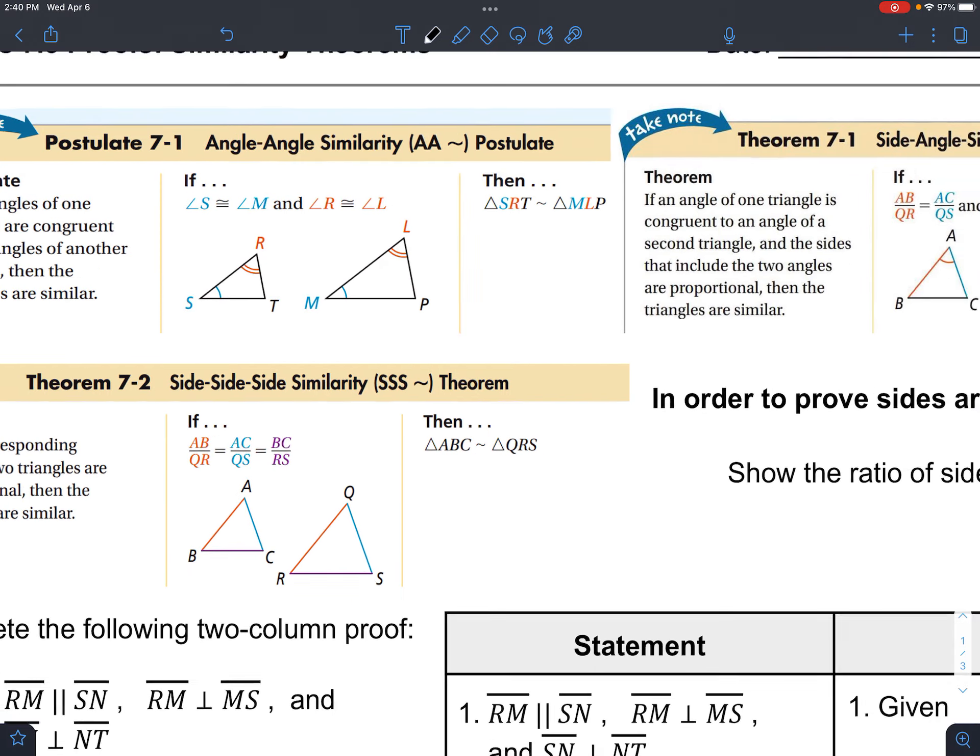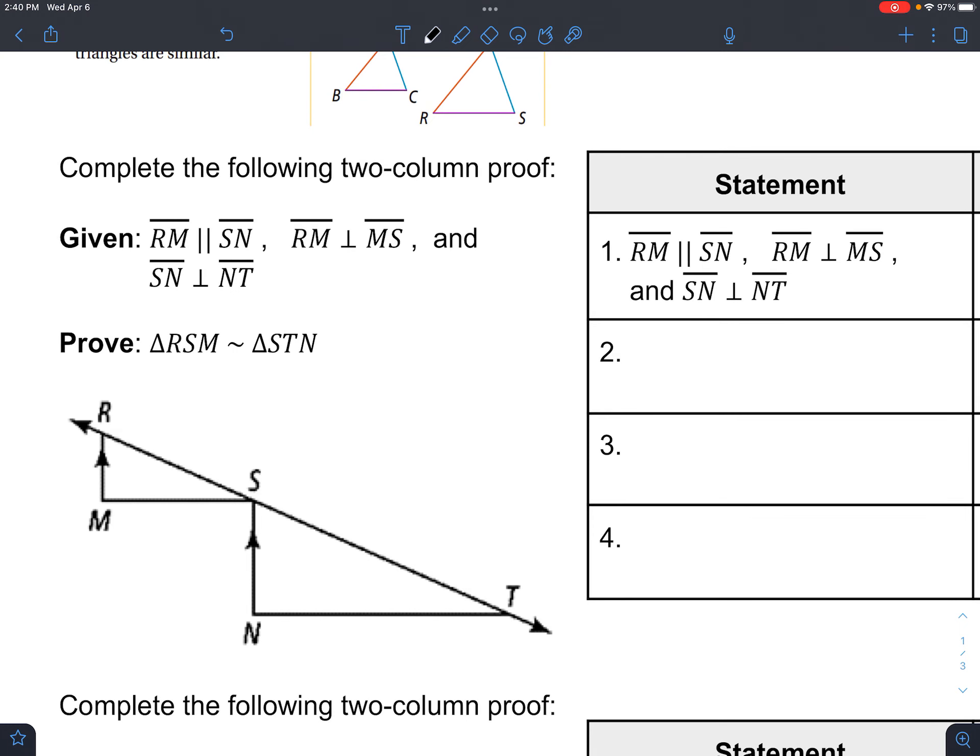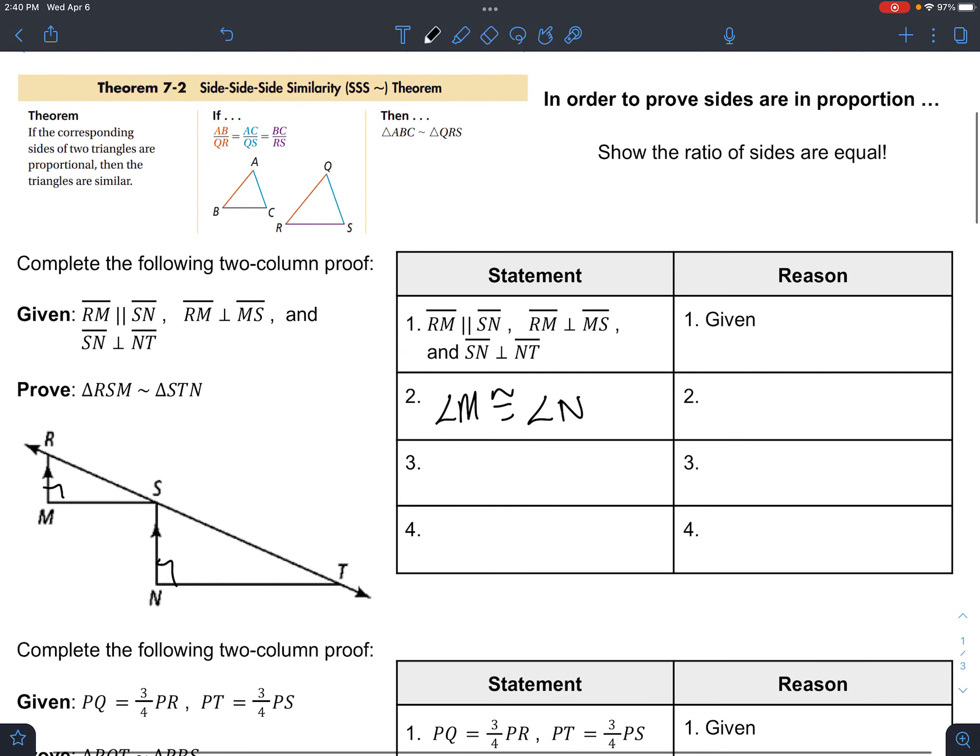First, we're given two parallel lines and two sets of perpendicular lines. One thing we know about being perpendicular is that we make right angles. So in other words, angle M is congruent to angle N. Why? Because of two definitions: the definition of perpendicular, meaning that they are both 90 degrees, and 90 degree angles are right angles, which means all right angles are equal. So those angles are equal—it's kind of two steps in one.